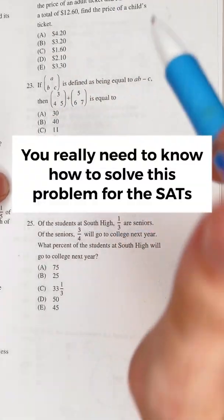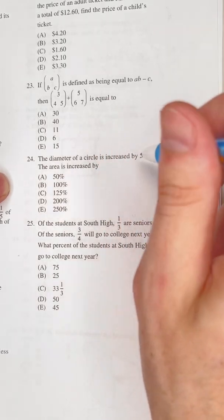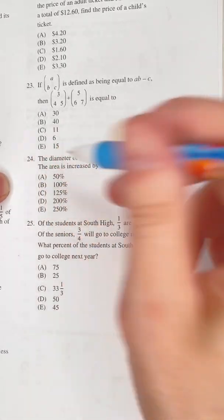So if you're a circle lover just like me, then you really got to know how to solve this problem for the SATs. The diameter of a circle is increased by 50 percent. The area increased by something.